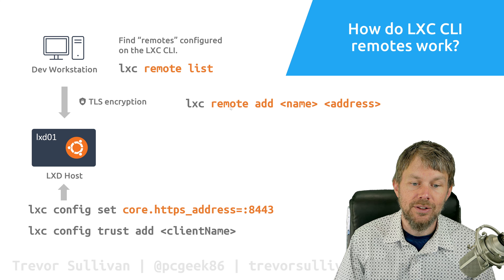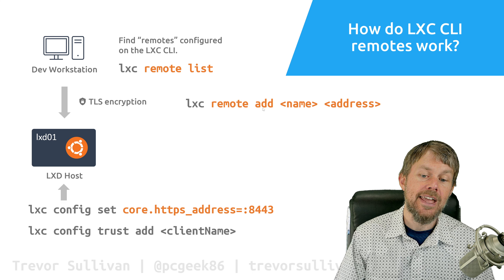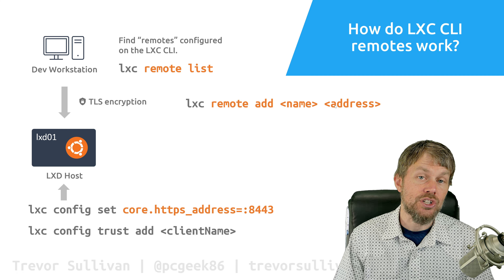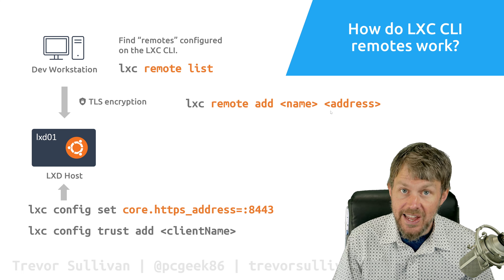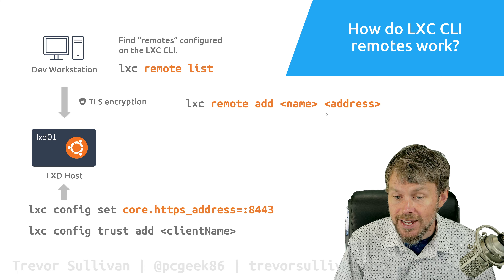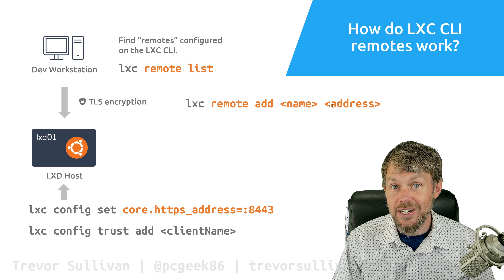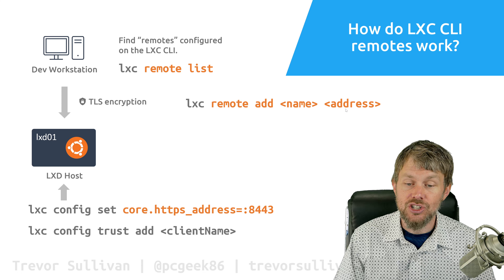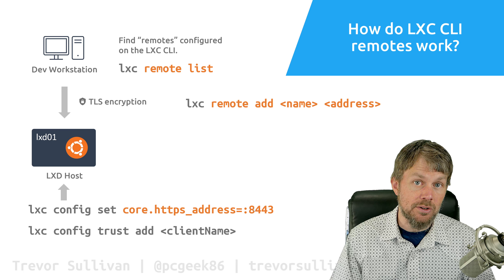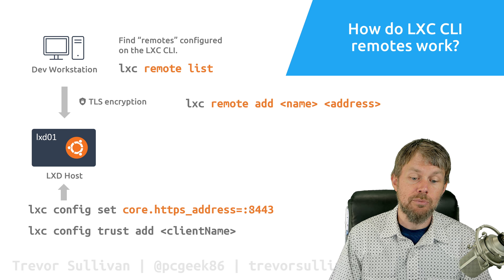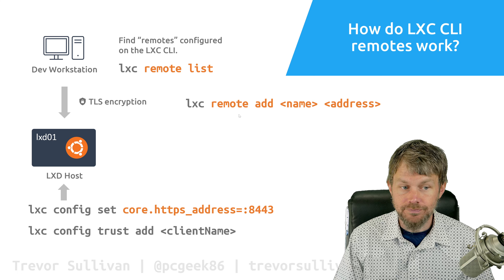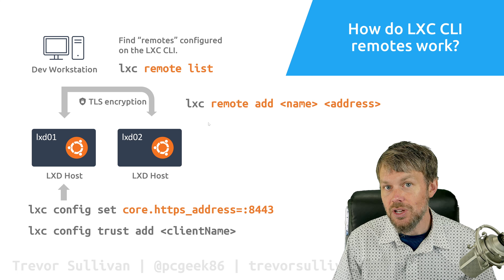On the client side, once we've configured the LXD engine, we run `lxc remote add` on our dev workstation and specify a unique name for the remote, plus the network address — which could be a DNS name, a multicast DNS name if you're using Avahi daemon, or a straight IP address. That will be the location where the LXD engine is listening. You'll need to specify the port number if you're not listening on the standard port 8443.